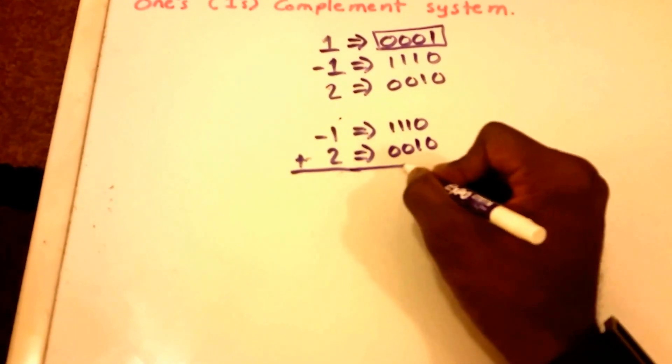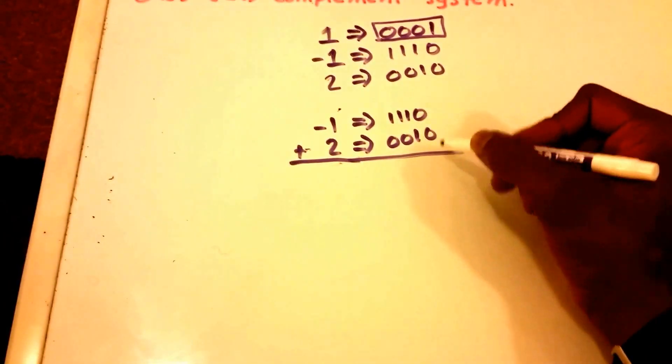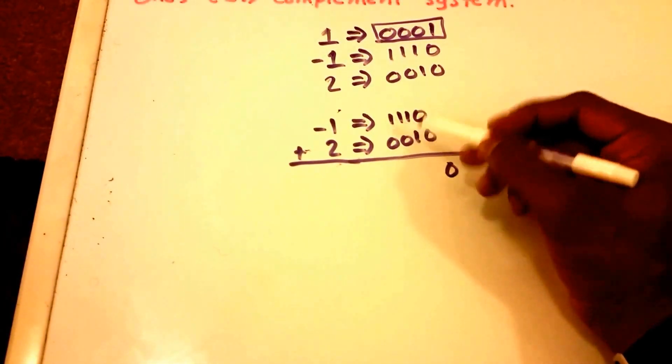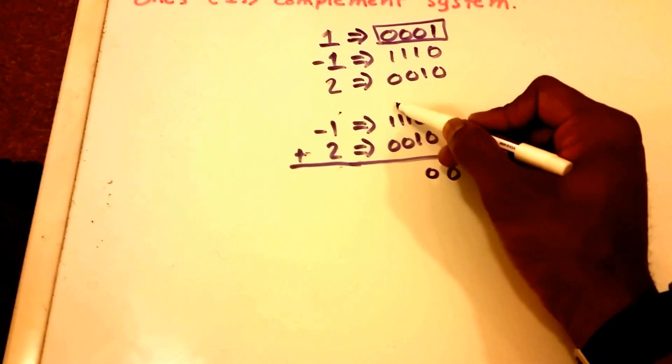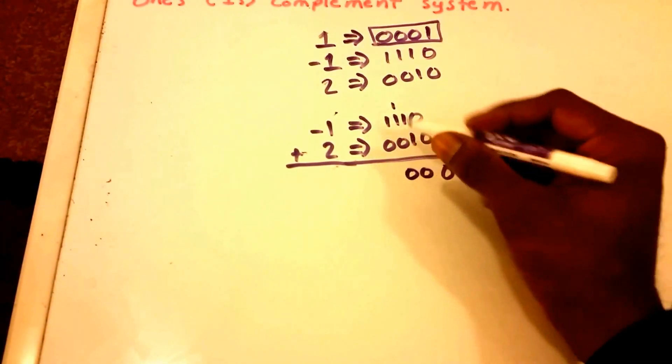Now let's go ahead and do this addition. So we get zero plus zero which is zero, one plus one is zero with a carry of one, the one plus one is zero with a carry of one.